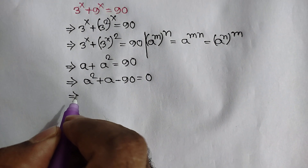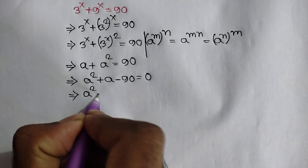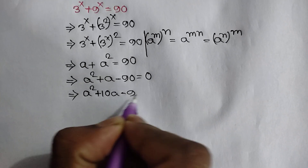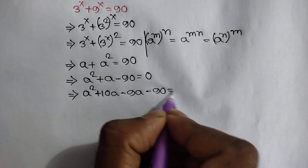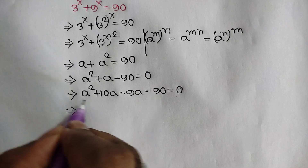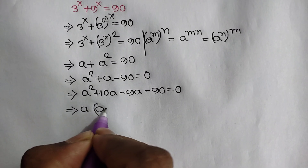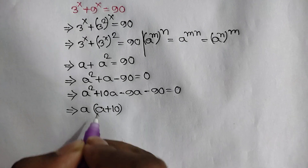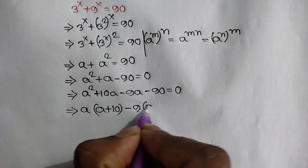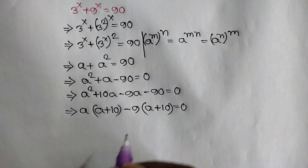Here we apply the middle term breaking rule, so we write a squared plus 10a minus 9a minus 90 is equal to 0. Taking a common from the first two terms gives a times (a plus 10), and taking negative 9 common from the last two terms gives negative 9 times (a plus 10), equal to 0.